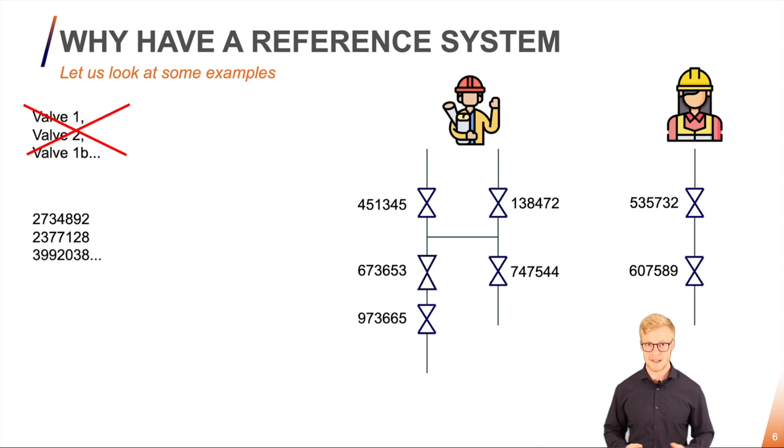But I have lost all sense of navigability. I cannot find anything in the real world because this number does not mean anything. If I want to find a valve, I would have no idea if I'm close to it or I'm in a completely different section of the plant. So this also doesn't work.